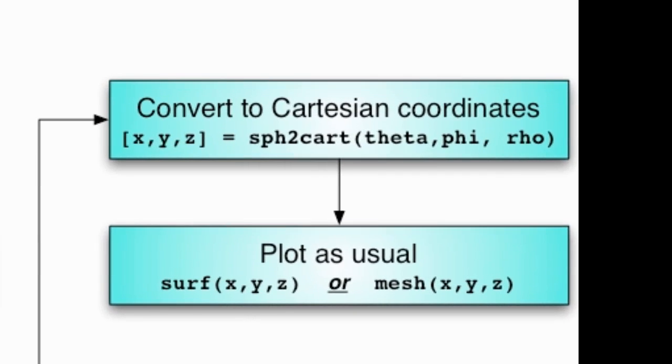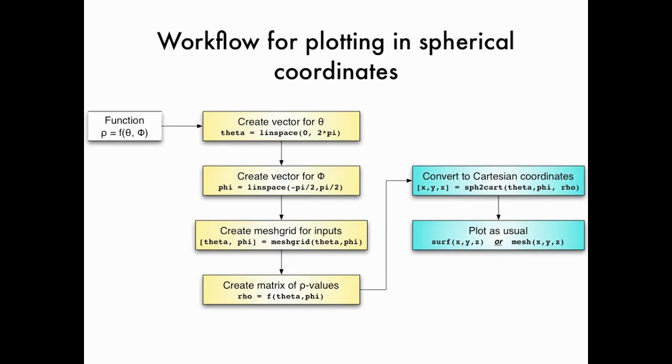And then I need to create a matrix of rho values using my function of theta and phi. Then I'm going to use the sphere to cart command to convert all of those theta, phi, and rho values en masse to Cartesian coordinates. Once I've done that, I just have a whole bunch of x, y, z values in Cartesian coordinates and I can just use the usual surf or mesh or related commands to plot the surface.